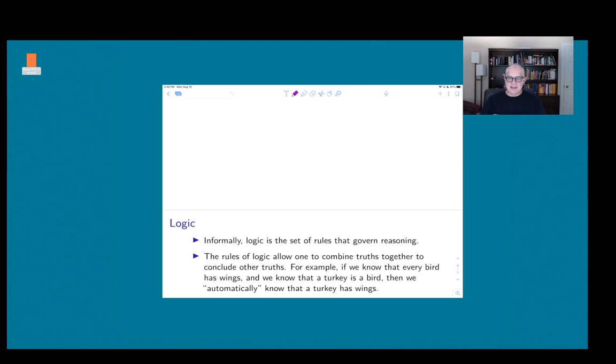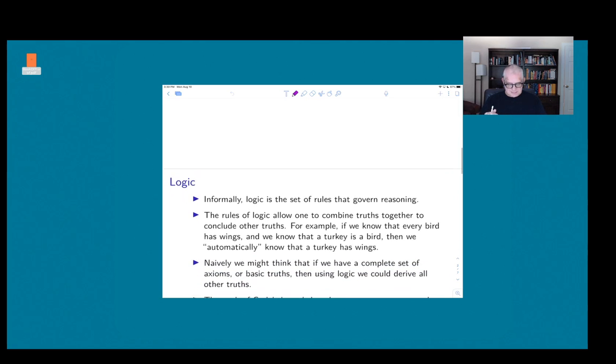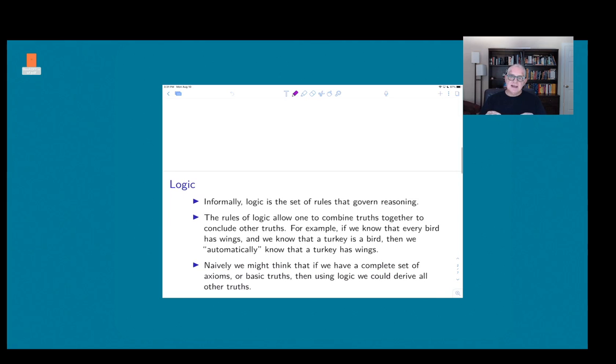A very common example would be: if I tell you that every bird has wings, and then I tell you that a turkey is a bird, then the rules of logic tell us that a turkey has wings. This is an automatic consequence—it's not really anything in particular about the content; it follows just from the way the language works.